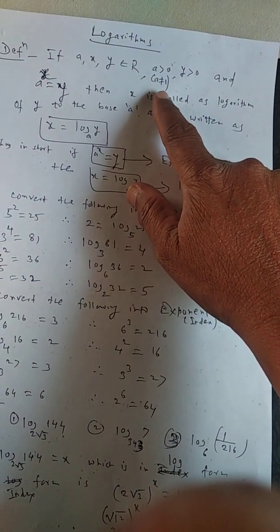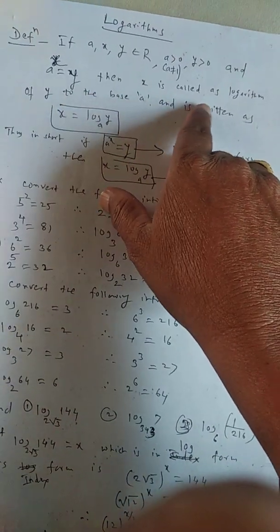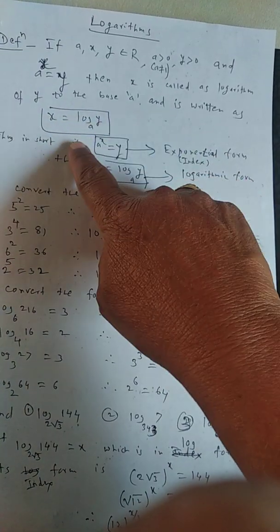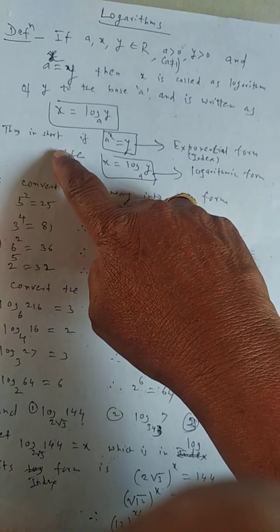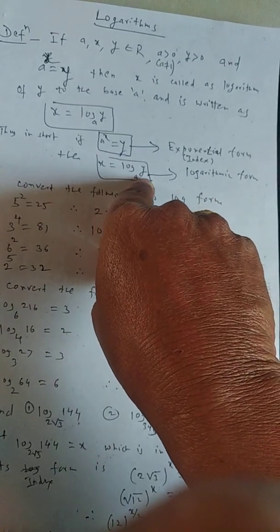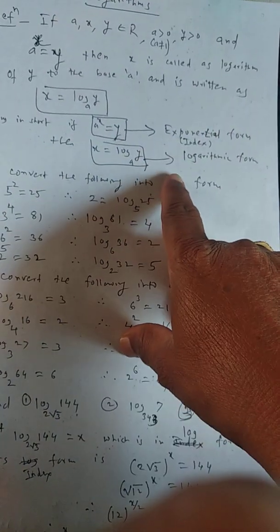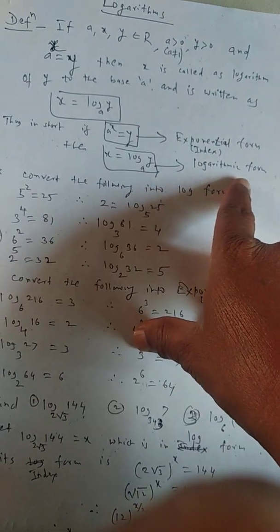Up to 10th standard, you have some introduction to logarithms, so continuing with the same, we will discuss some more things here. The definition is: if A, X, Y belong to R, where A is positive, Y is positive, and A is not equal to 1, and A raised to X is equal to Y, then X is called the logarithm of Y to the base A, written as X = log_A(Y). A raised to X = Y is called the exponential form or index form, whereas X = log_A(Y) is called the logarithmic form.